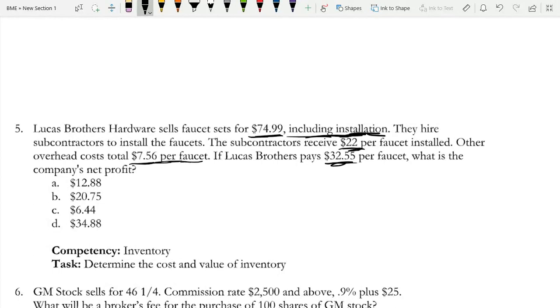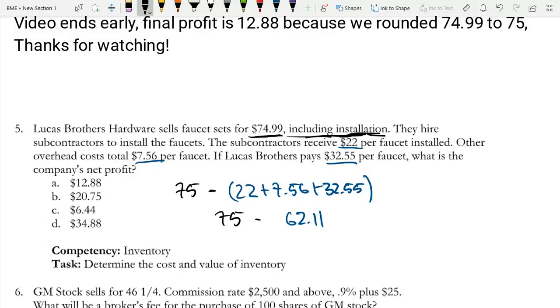I'm just going to do a bit of rounding to make this simpler. The cost to have one of these installed is $75, but now we have to subtract all of the costs. We have to subtract $22, $7.56, and $32.55. So all these costs added together equal 22 plus 7.56 plus 32.55, which is $62.11. And now if we do 75 minus 62.11, we have $12.89.